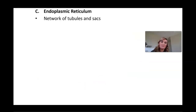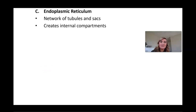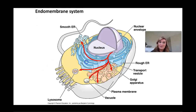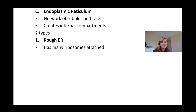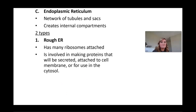The endoplasmic reticulum, often referred to as the ER, is a network of tubules and sacs that creates internal compartments. You can see how this internal endomembranous system is connected and sends products throughout the cell and outside of it. The rough endoplasmic reticulum is called rough because it has ribosomes attached to the outside, making it look bumpy. It's involved in making proteins that will be secreted, attached to a cell membrane, or used within the cytoplasm. It also actively helps make more membrane.